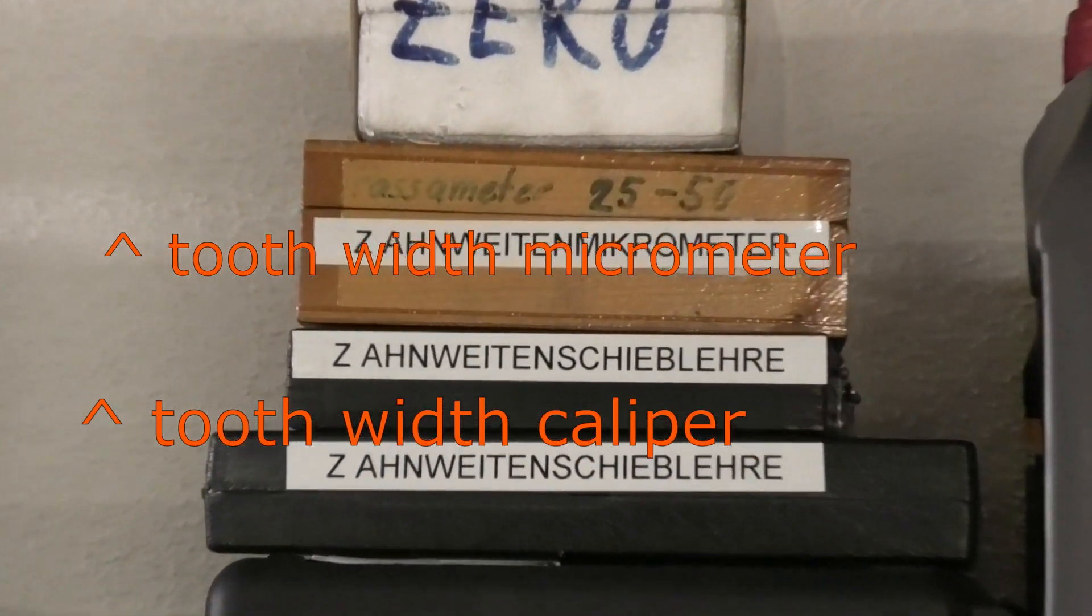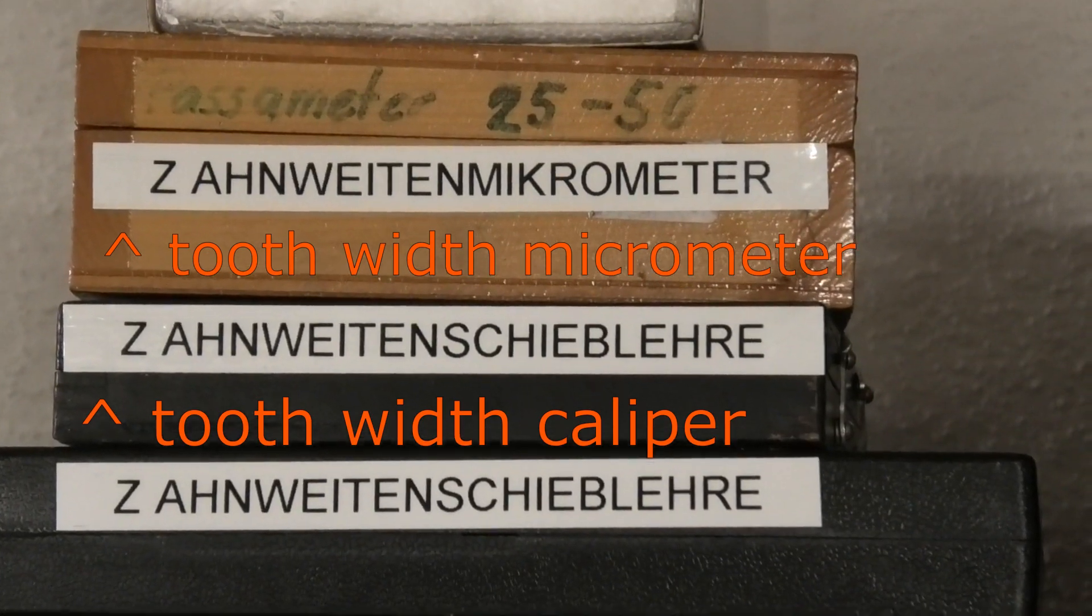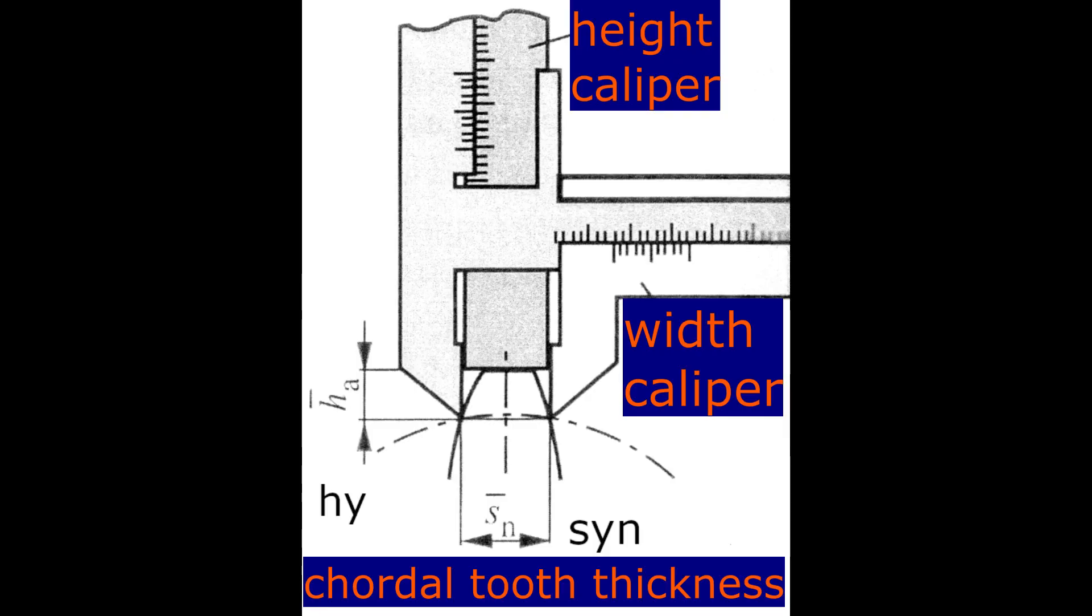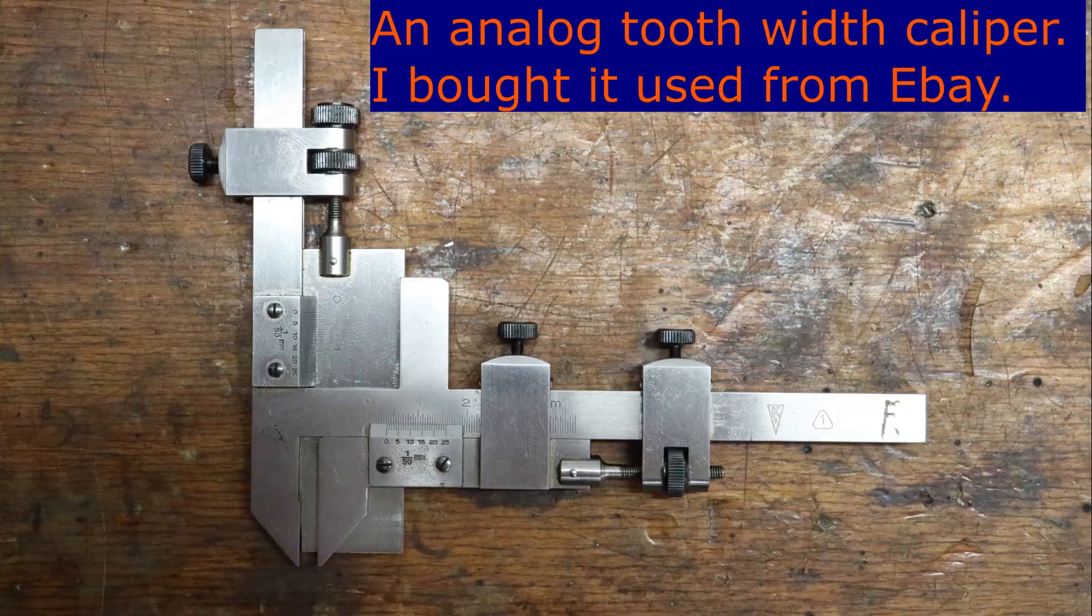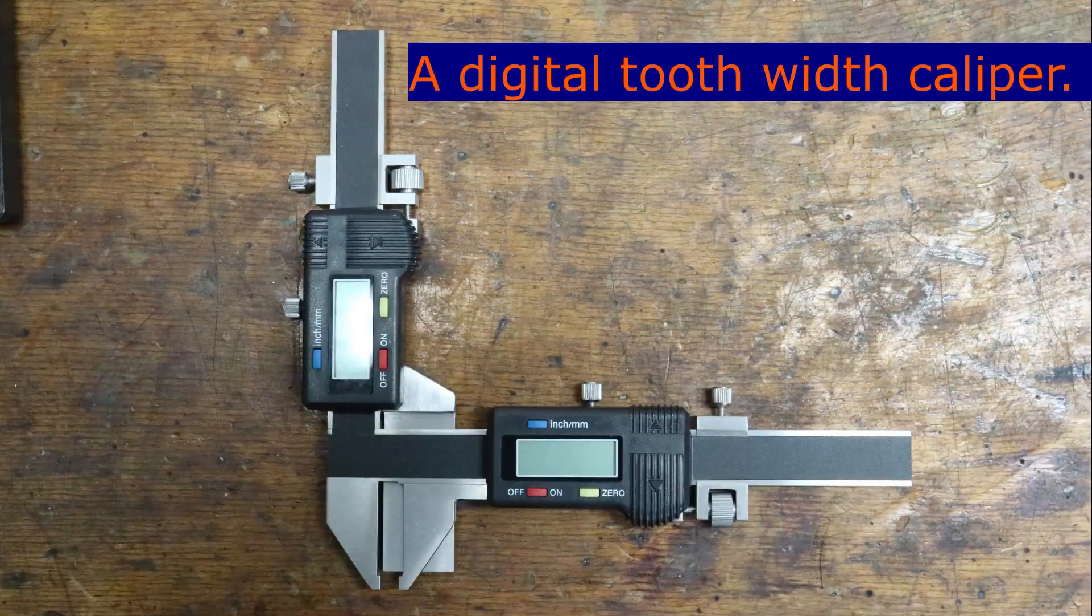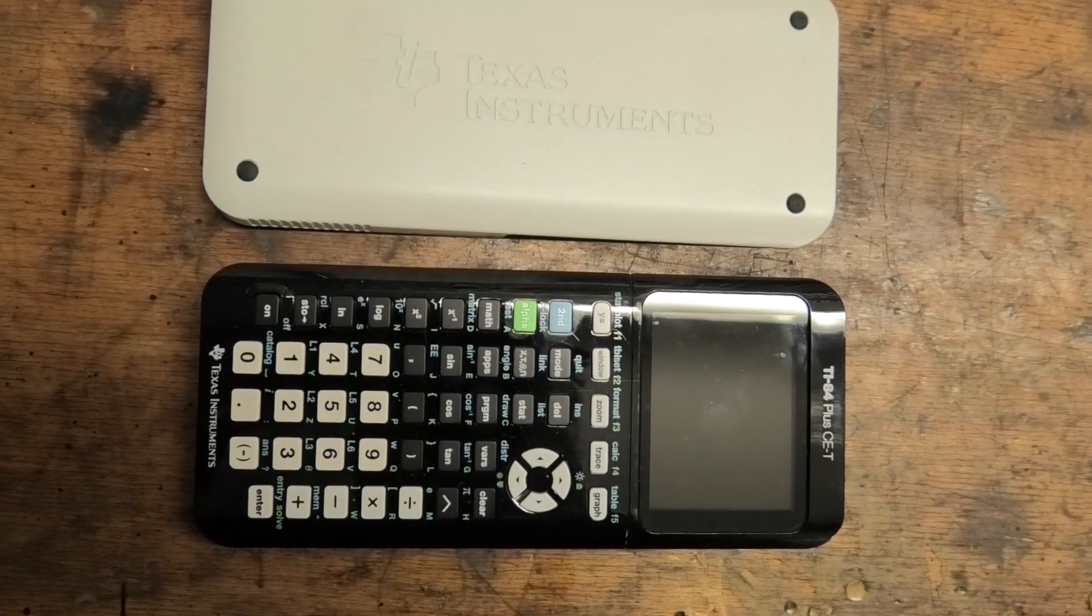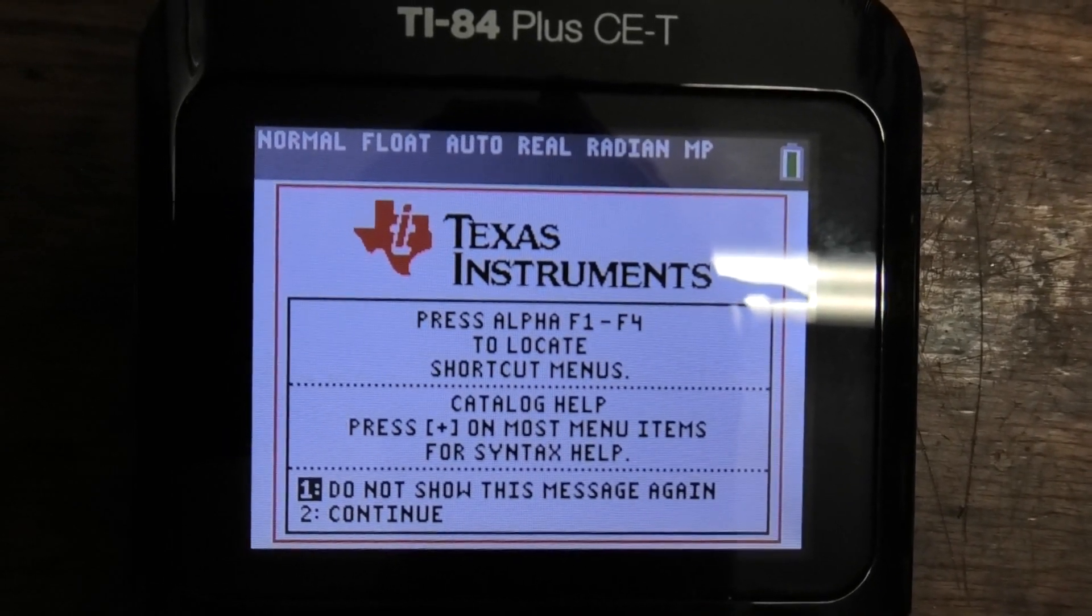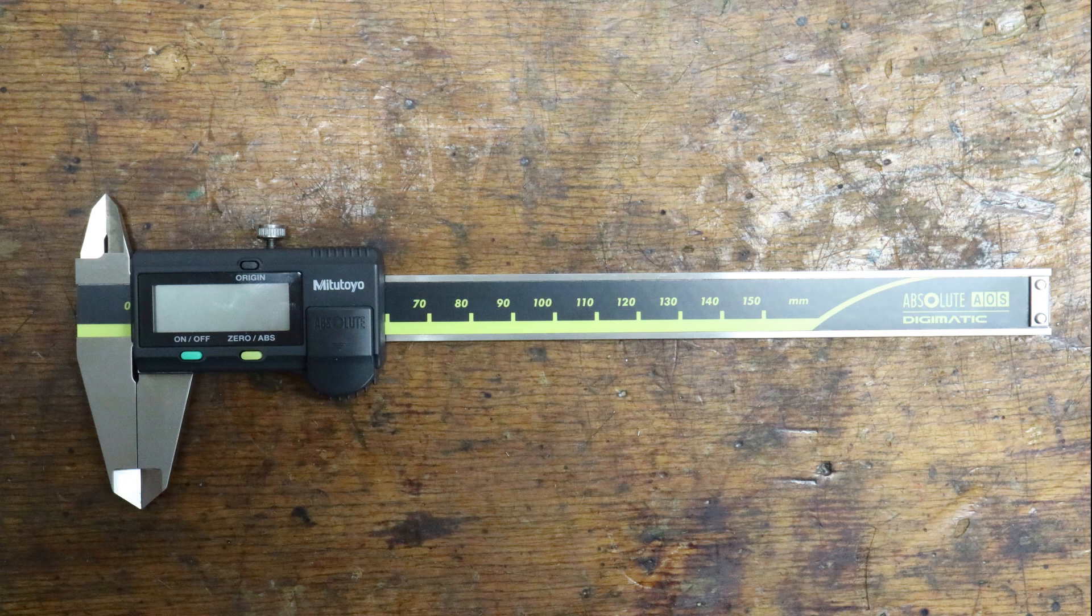We need a tooth gauge, either analog or digital. The tooth widths can be measured corresponding to the height with a tooth width measuring caliper. Let us design a calculation program that places the measured points on the calculated involute. We need a caliper for the outside diameter.